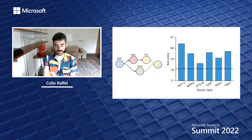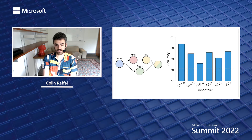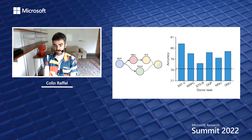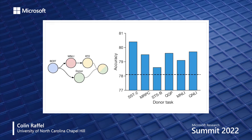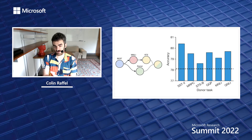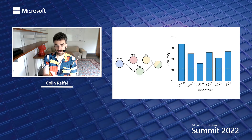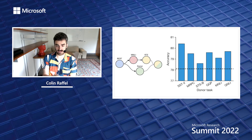We can also consider unusual versions of intermediate task training — for example, taking BERT, fine-tuning it on MNLI, which is a natural language inference dataset known to help RTE as a downstream task, and then separately fine-tuning BERT on a donor task and merging the RTE model and the donor model. Doing so significantly boosts performance beyond standard intermediate task training. This pipeline would be onerous or even impossible with standard gradient-based training because of catastrophic forgetting — if we did MNLI training, then donor task training, then RTE training sequentially, the model would likely have forgotten what it learned on the MNLI task.